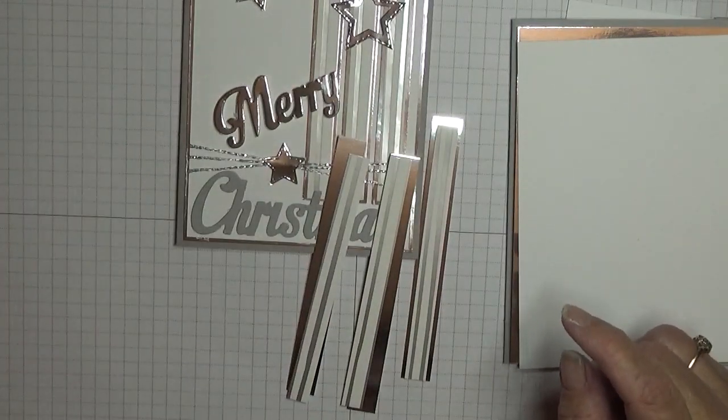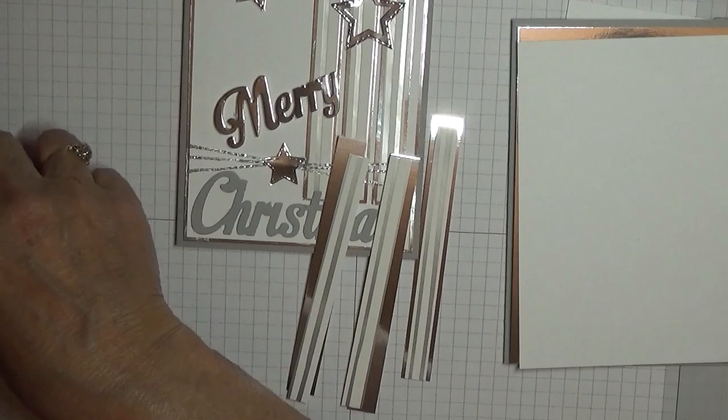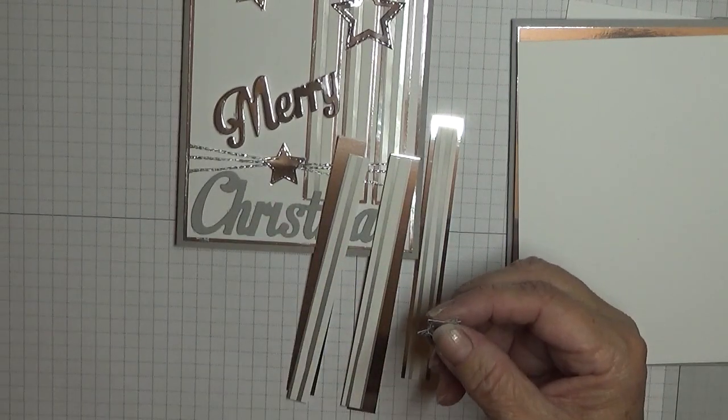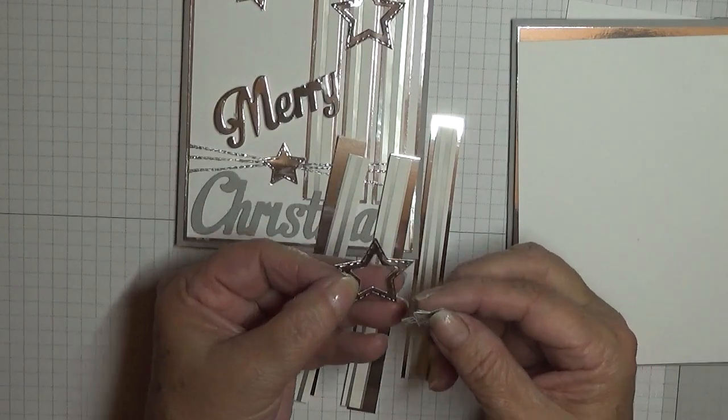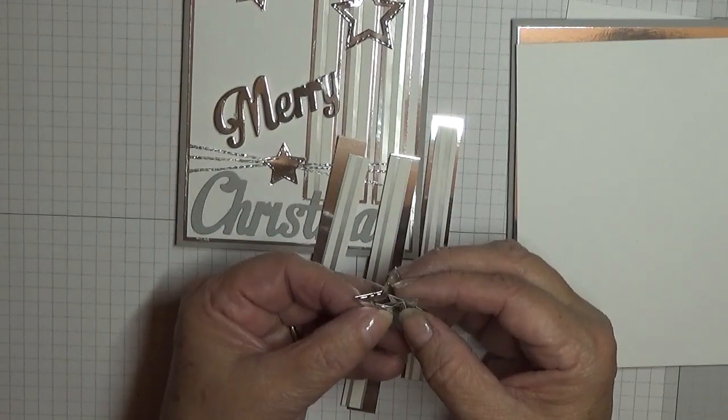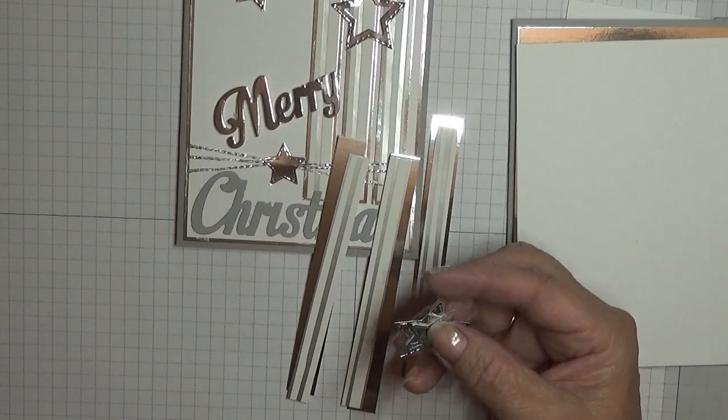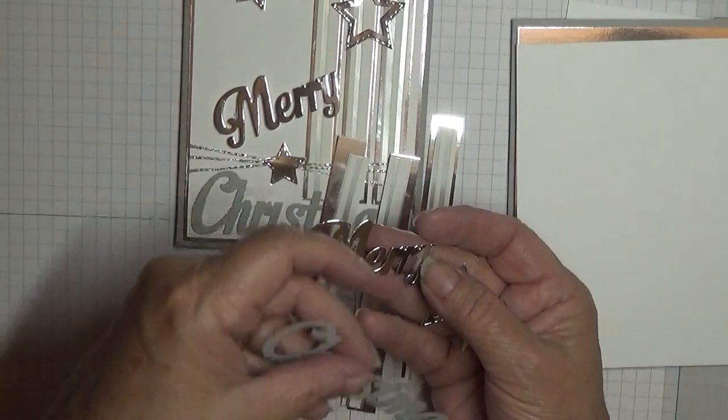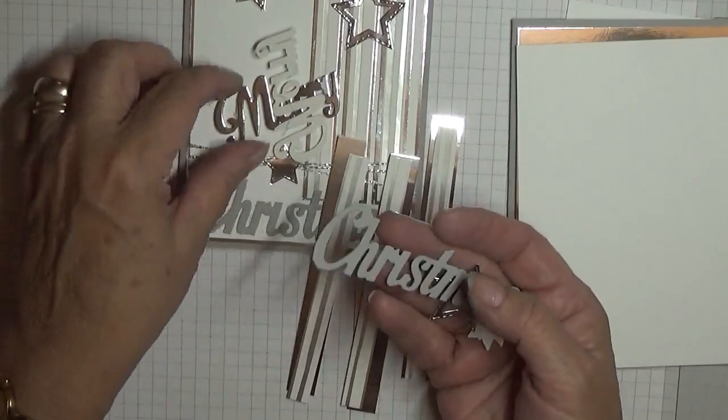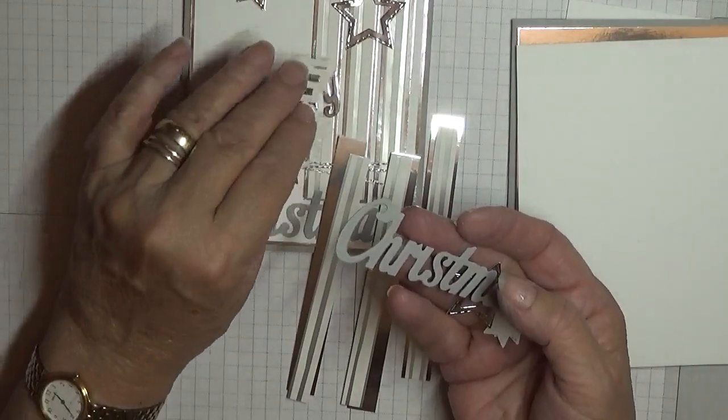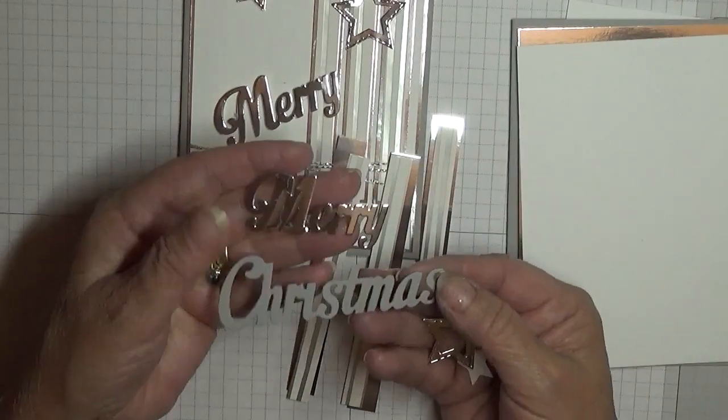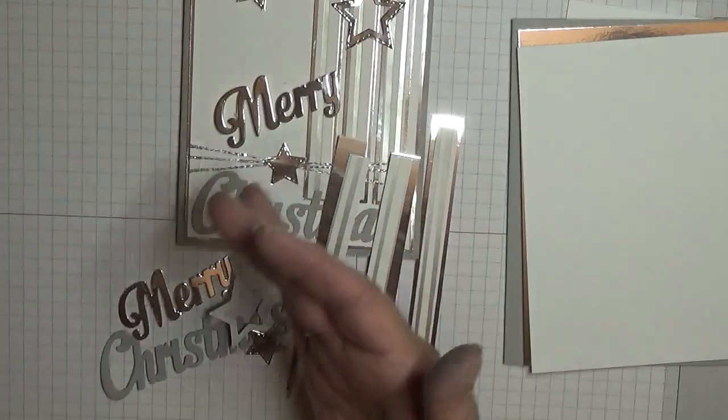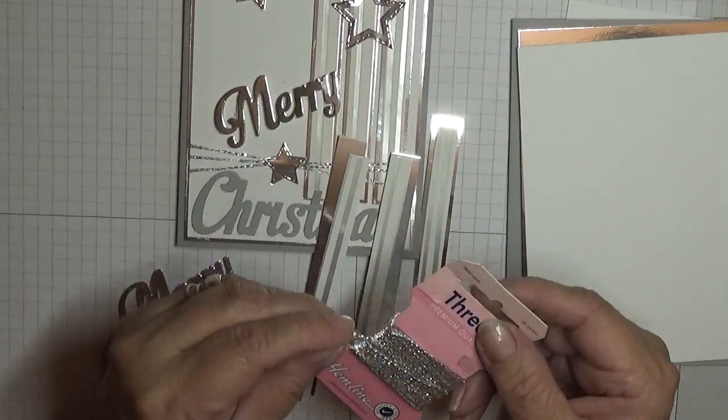I've also cut out two full stars and I'll start with one of these cut out of it and I've also cut out a merry in foil and Christmas in smoky slate. This card really is just a cut and stick so I call it you cut it or I cut it and I stick it and I've also got some silver thread.